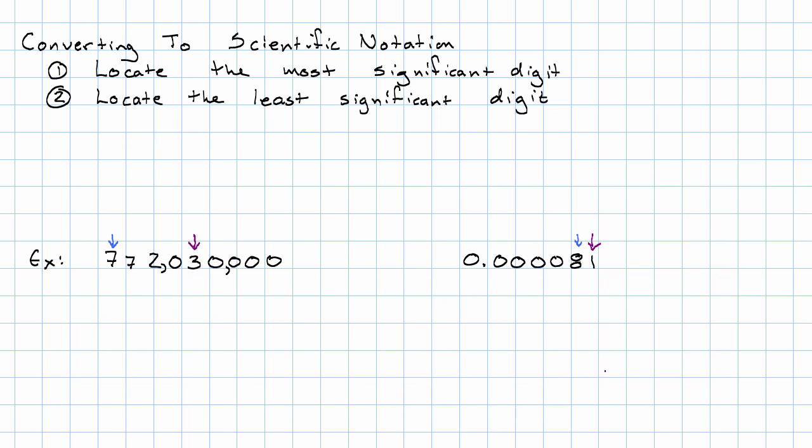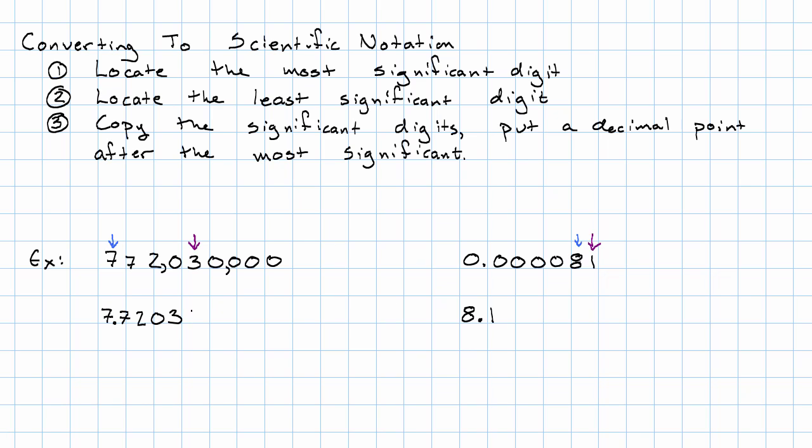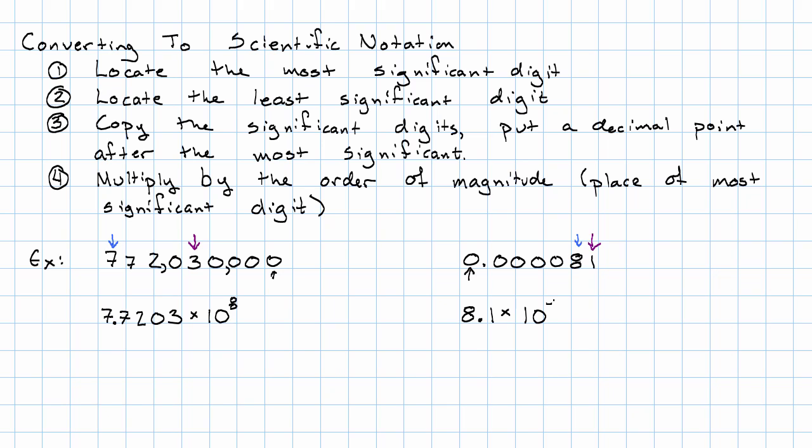And then once I've done that, I can just copy the significant digits and put a decimal point after the most significant digit. Now I just need to figure out the order of magnitude, which is going to be the place where the most significant digit is. So I count out 0, 1, 2, 3, 4, 5, 6, 7, 8. So this is going to be times 10 to the eighth. And here I count out 0, negative 1, negative 2, negative 3, negative 4, negative 5. 8.1 times 10 to the negative 5.